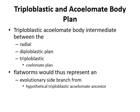Flatworms represent an evolutionary side branch from a hypothetical triploblastic acoelomate ancestor. Radial animals are those having one central axis that can be divided into multiple mirror images. Diploblastic means having two layers — ectoderm and endoderm — while triploblastic means having three layers: ectoderm, mesoderm, and endoderm.